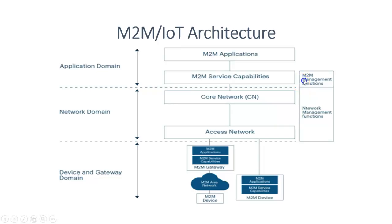There are two key management functions in the M2M architecture: the M2M management function and the network management function. The M2M management function provides service capabilities and applications, ensures device interoperability, and provides security and access control. The network management function manages the network infrastructure like routers, access points, and servers, ensures quality of service and reliability, and handles connectivity issues.